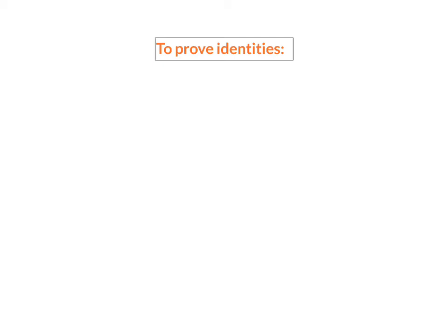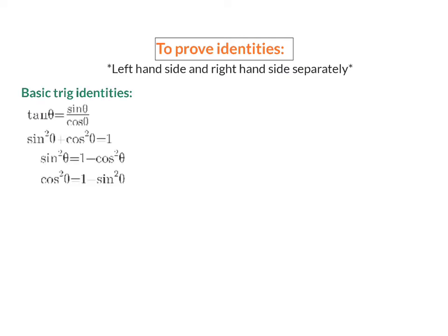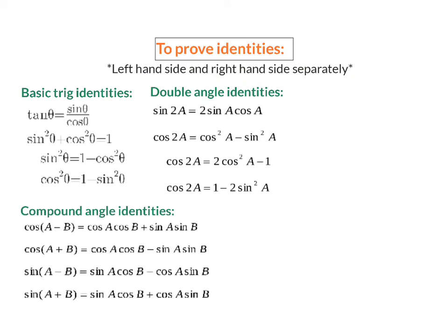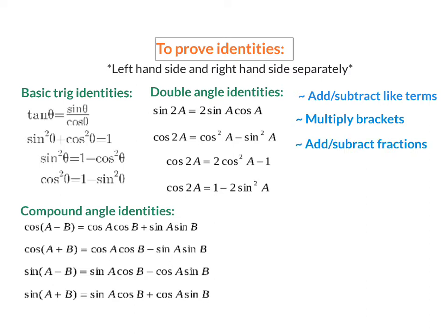To prove an identity, we use the left-hand side and right-hand side expressions separately and manipulate and simplify them until they equal the same expression. To do this, we need to know our basic trig identities, double angle identities, and compound angle identities. For algebra, we need to know how to add or subtract like terms, multiply out brackets, add or subtract fractions, and how to factorize.